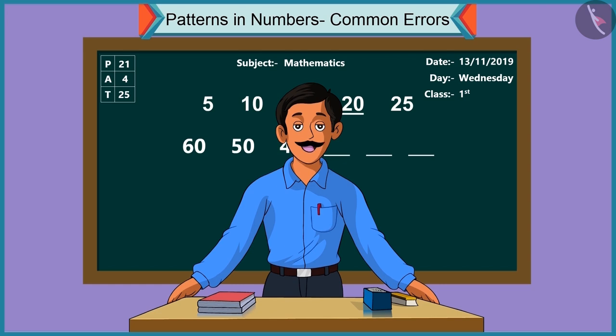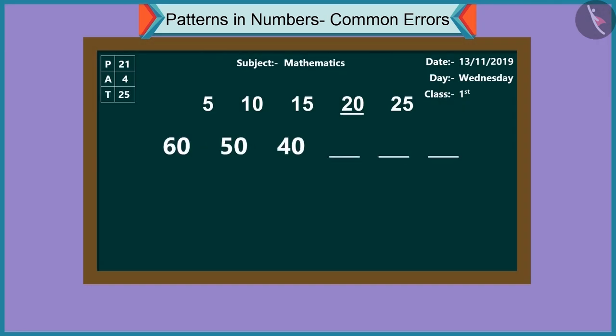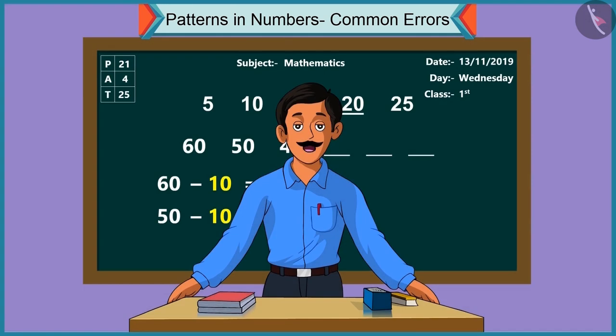Let's understand this pattern. In this pattern, subtracting ten from sixty, we get fifty. Subtracting ten from fifty, we'll get forty. Similarly, subtracting ten each time, we proceed with this pattern.